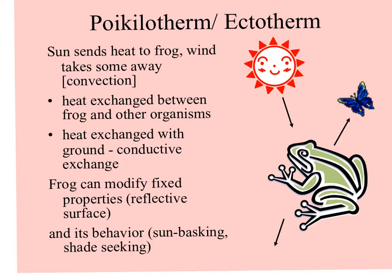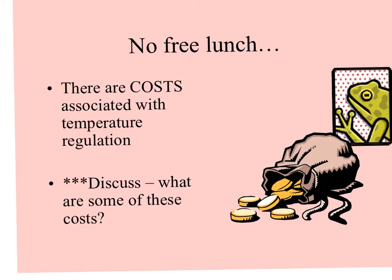If a butterfly passes by or sits on the frog momentarily, heat is exchanged. Heat is also exchanged with the ground — that's conductive exchange. The frog can modify its shape by stretching out, increasing the reflective surface, or huddling very small, and also its behavior. Many poikilotherms will seek shade in very hot conditions, and when it's cool, you'll find them on the surface of a rock or asphalt warming up.